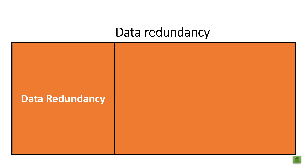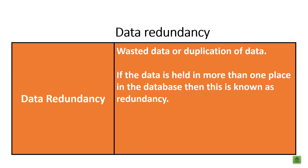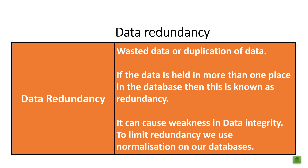Next, data redundancy — which we've already touched on. Data redundancy is wasted or duplicated data. If the data is held in more than one place in the database, this is known as redundancy, and we need to remove it at all costs. It can cause weakness in data integrity. To limit redundancy we enact normalization on our databases — and we cover normalization in another video, so be sure to check that out.